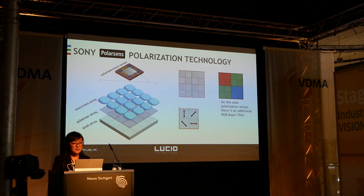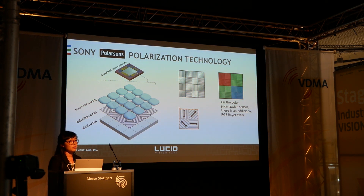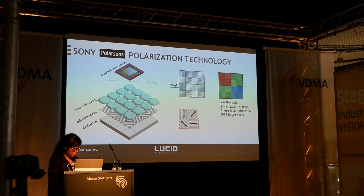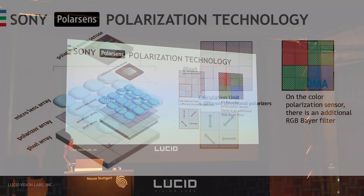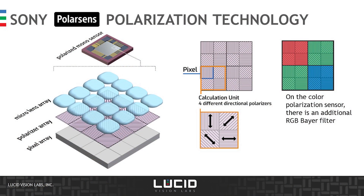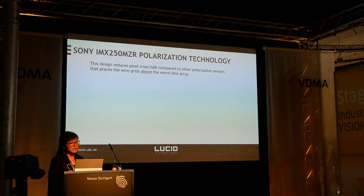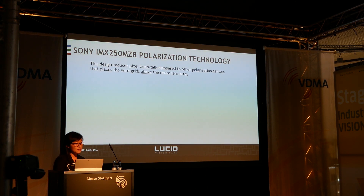We also have the color polarization sensor, which has an RGB filter on top of the polarization wire grid. On the monochrome version, each pixel has its own polarization wire grid, and every four pixels form a calculation unit with four different directional polarization filters. The benefit of Sony IMX250MZR polarization technology is that it reduces pixel crosstalk when compared to other traditional techniques to capture polarized light.